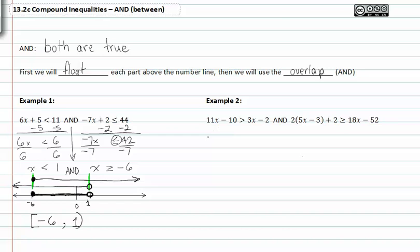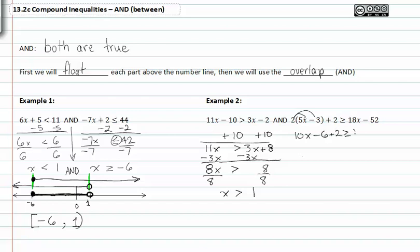In example two, we'll go ahead and solve this one as well. Adding 10 to both sides we get 11x is greater than 3x plus 8. Subtract 3x from both sides and we get 8x is greater than 8. On the other side we distribute the 2 through the grouping and we get 10x minus 6 plus 2 is greater than or equal to 18x minus 52. Combining these like terms we get 10x minus 4 is greater than or equal to 18x minus 52.